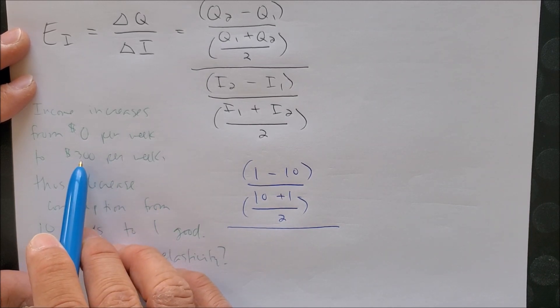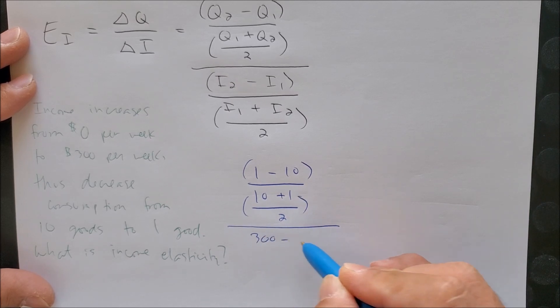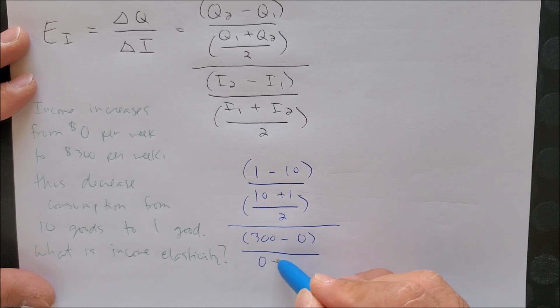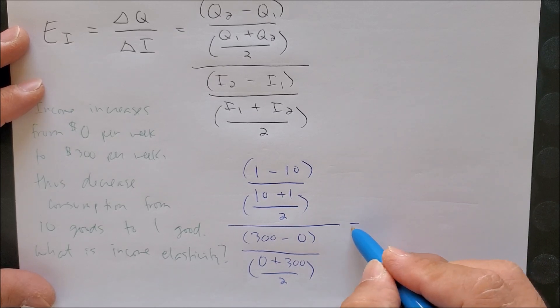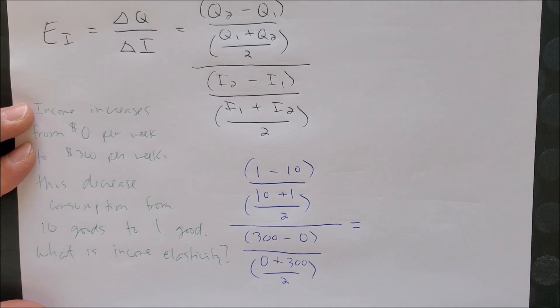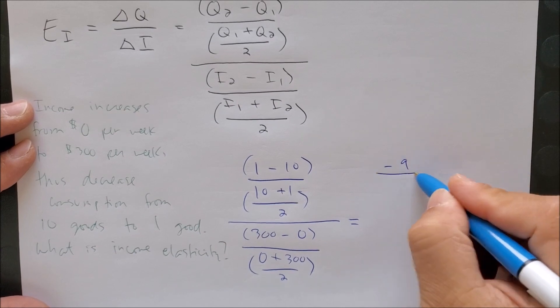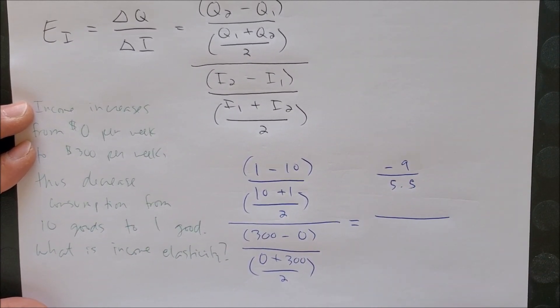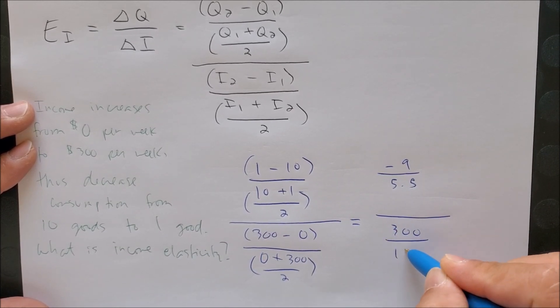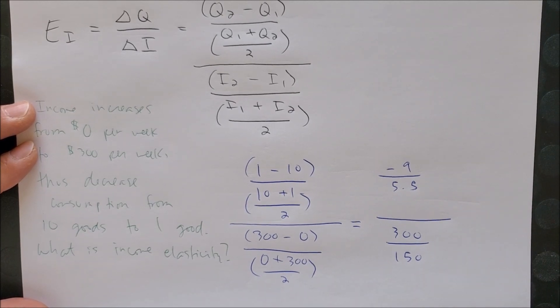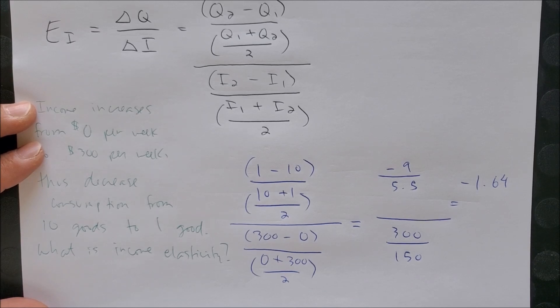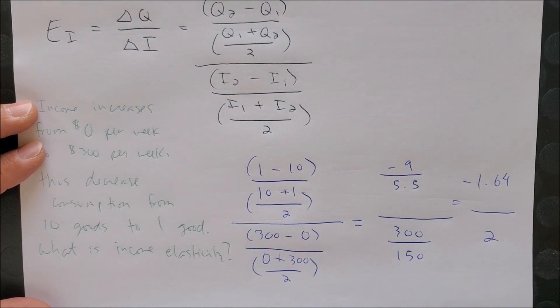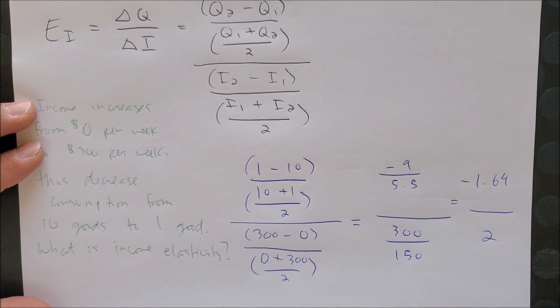For income we can see that 300 is the new income: 300 minus 0 over the average of both incomes over two. So now we don't run into the issue of not being able to solve the problem because now we have the average of both incomes. Let's go ahead and solve for this one and see what we get. We have negative 9 over 5.5 and this is all over 300 over 150. When we further divide negative 9 over 5.5, we get negative 1.64, rounding off to the nearest hundredths, over 2. And now we can get the final answer and what we get is negative 0.82 as our final answer.